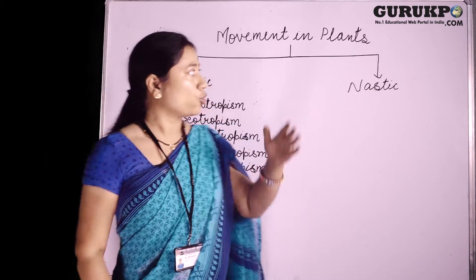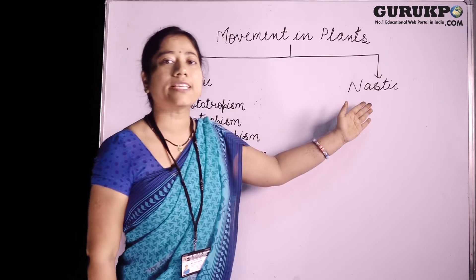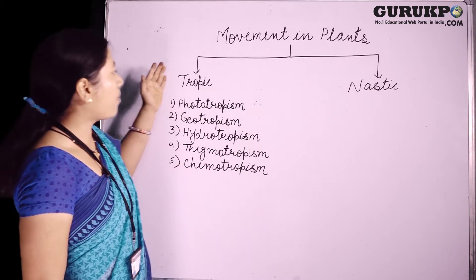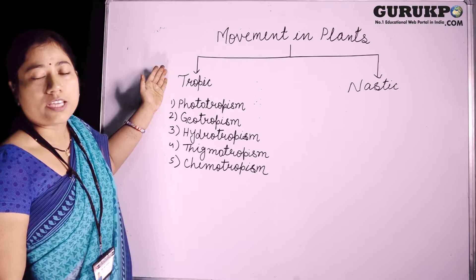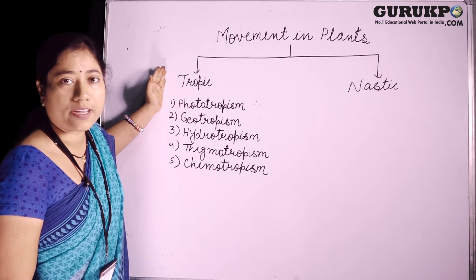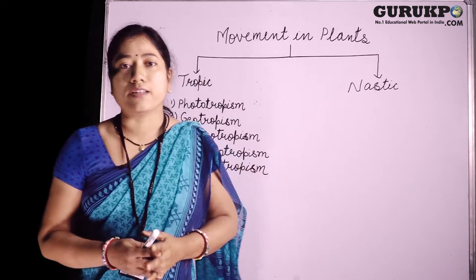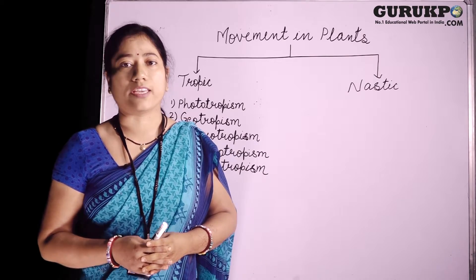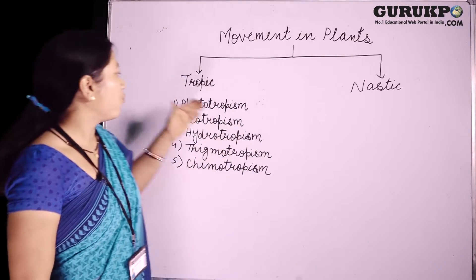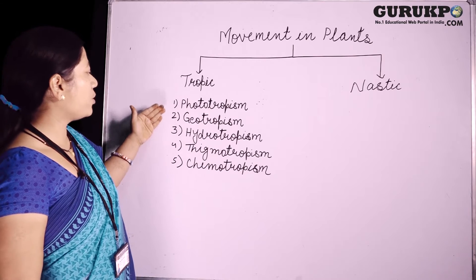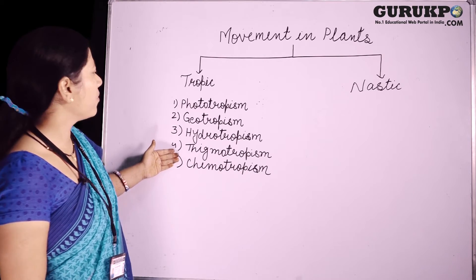In plants, the two types of movements are tropic movement and nastic movement. First we talk about tropic movement. What are tropic movements? These are directional movements, meaning their direction is guided by external stimuli. We can divide tropic movements into phototropism, geotropism, hydrotropism, thigmotropism, and chemotropism.